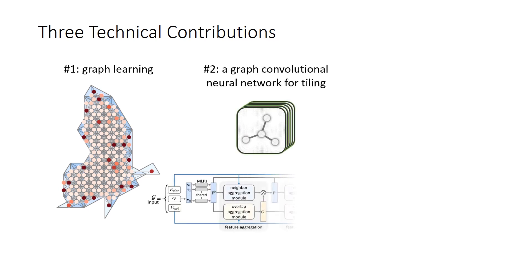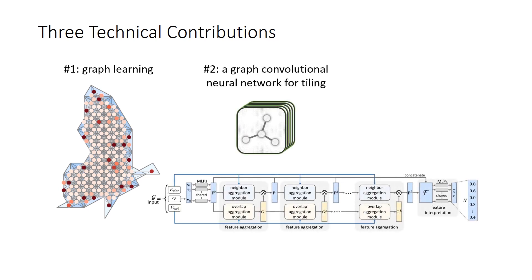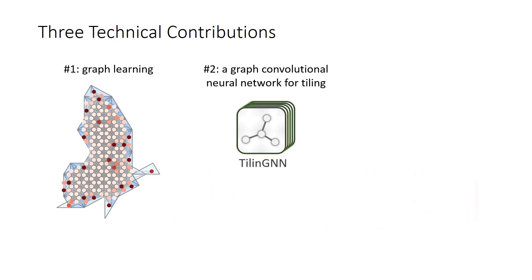Second, we design a graph convolutional neural network to predict tile placements via graph convolution. We call our network TilingGNN.